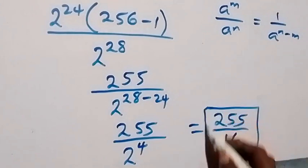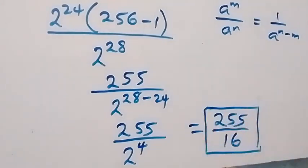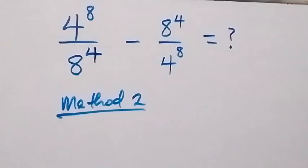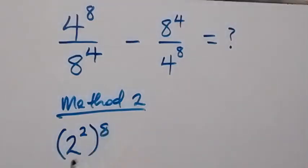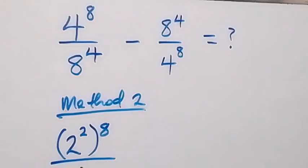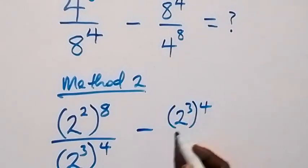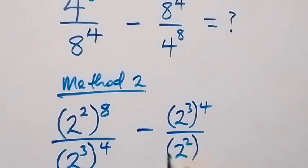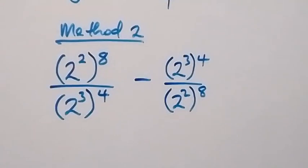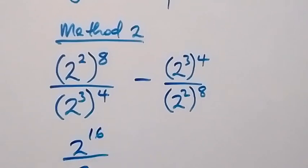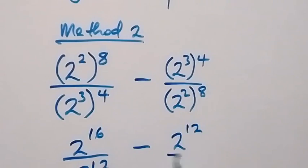We can also use a second method: change everything to base 2. This gives us 2 raised to power 2, raised to power 8, divided by 2 raised to power 3, raised to power 4, minus 2 raised to power 3, raised to power 4, divided by 2 raised to power 2, raised to power 8. Multiplying the powers, this becomes 2 raised to power 16 over 2 raised to power 12, minus 2 raised to power 12 over 2 raised to power 16.